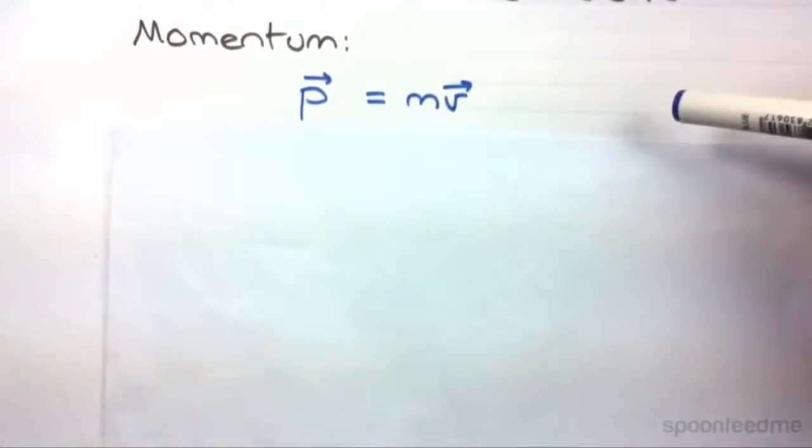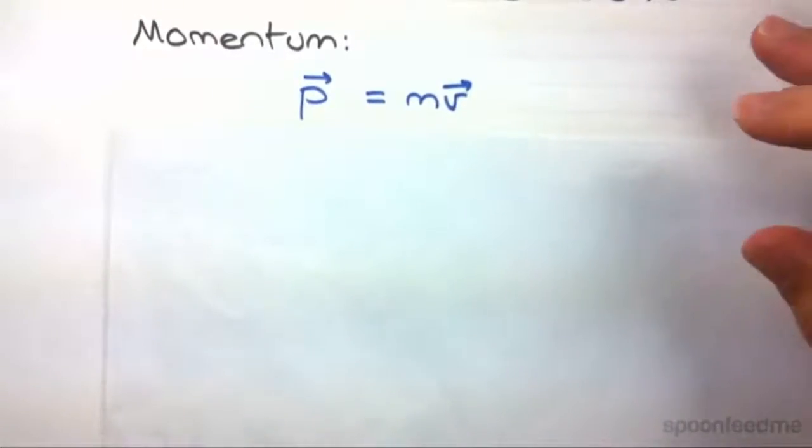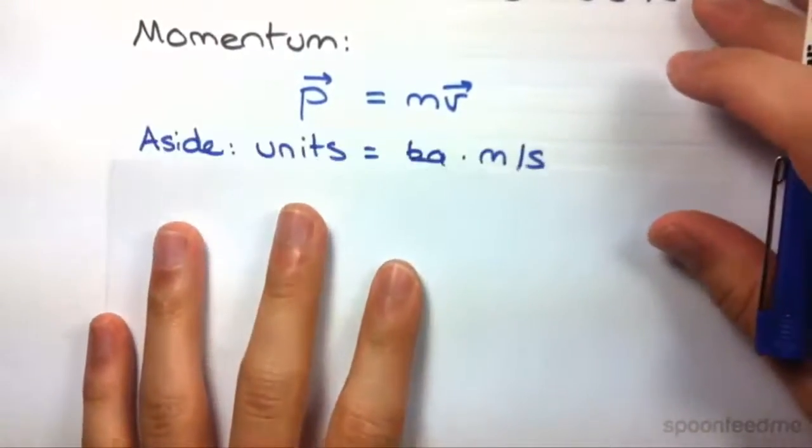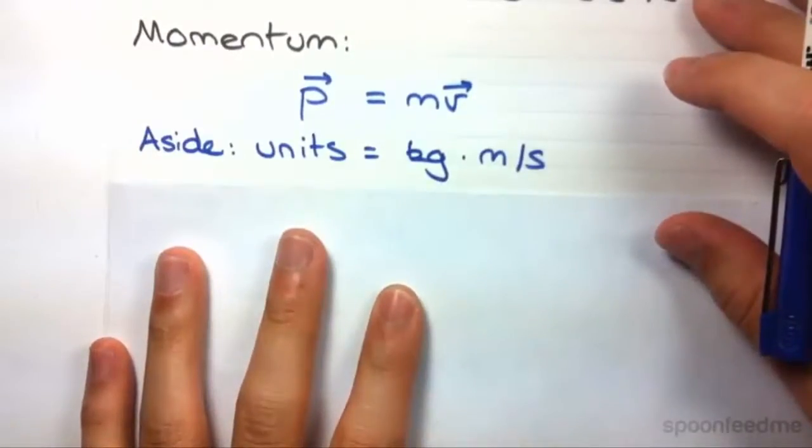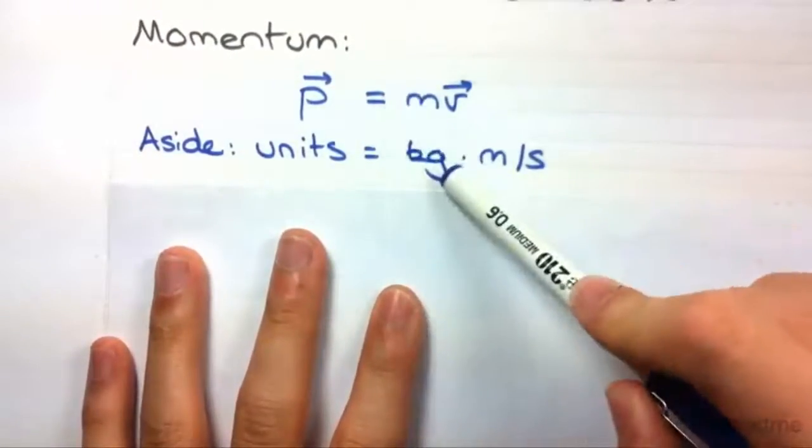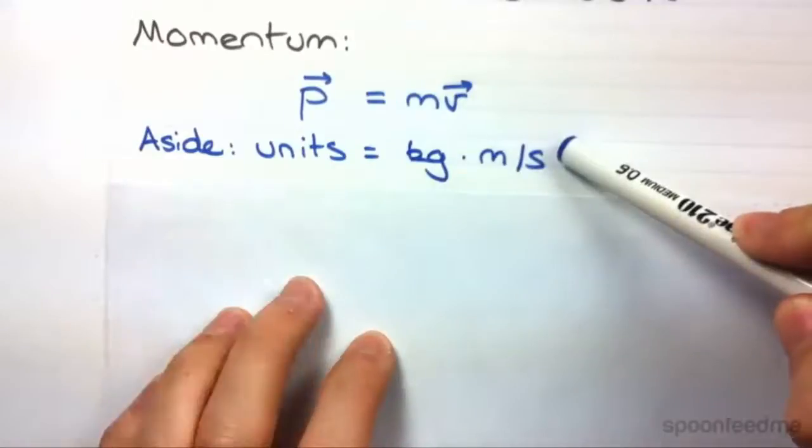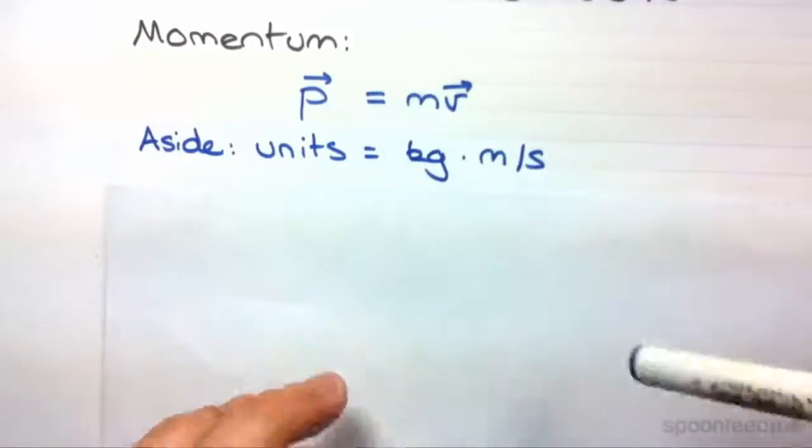Right now we're going to look at another use for momentum which is solving collision problems. Just before we move on to that, the units: mass is in kilograms and velocity is in meters per second, so momentum is in kilogram meters per second.